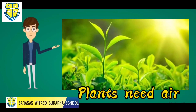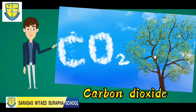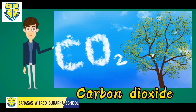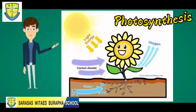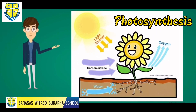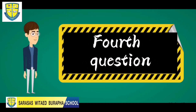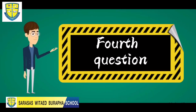Our third question is: why is air important to plants? Plants need the air — carbon dioxide — for them to photosynthesize, or to make their own food.